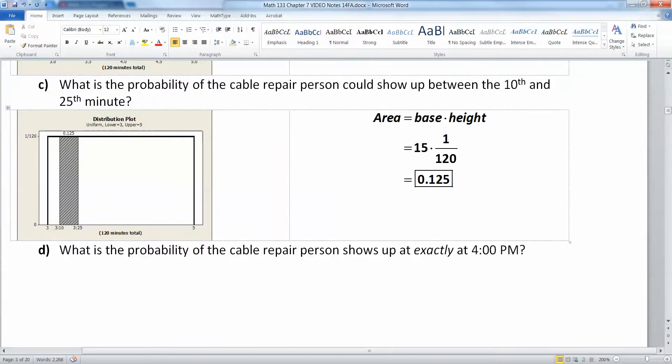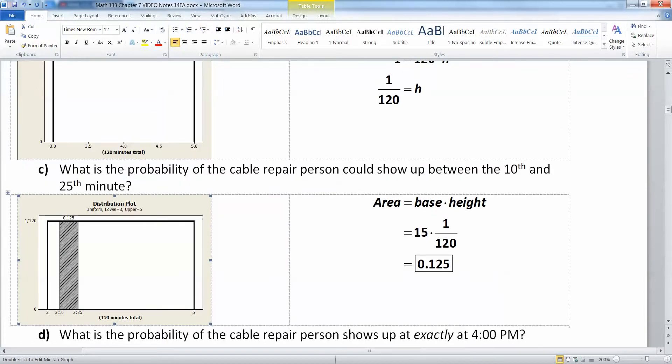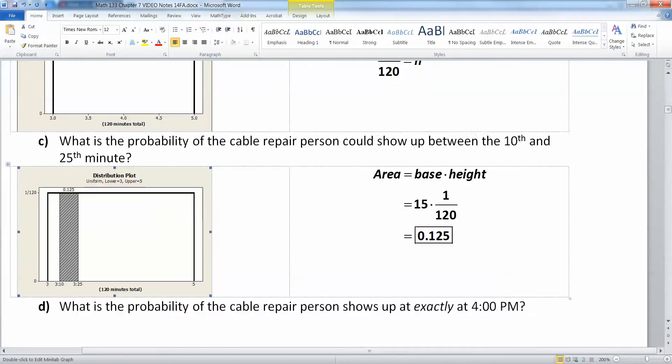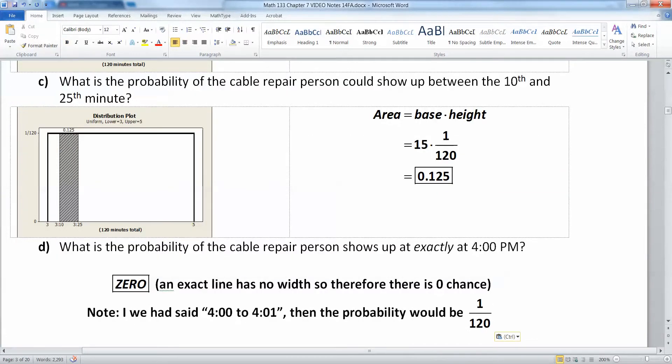Now what is the probability that the cable repair person shows up at exactly 4 o'clock? Well, that's a little bit of a trick question. 4 o'clock is this line down the center, but it's a line. Lines don't have an area. They don't have a shading that you can give it, which means that the answer is actually 0, because any one second, any one instant, has no width to it. It has no width, therefore it has 0 probability, 0 chance.